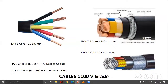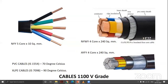Cables differ from wires: wires per IS 694 are maximum 650 V grade, while cables are 1100 V grade and above. Higher voltage grades available include 3.3 kV, 6.6 kV, 11 kV, 22 kV, 66 kV, and 110 kV; above that only bare conductors are used.